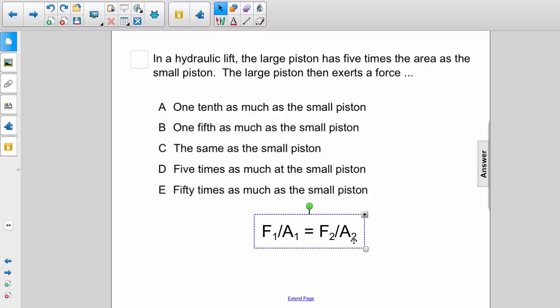Consequently, if we increase an area five-fold, we must compensate with a force that is five times as large. Therefore, D is the correct answer. The large piston with five times the area will exert five times the force.